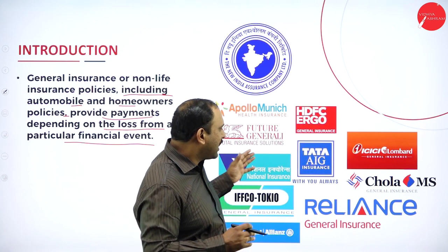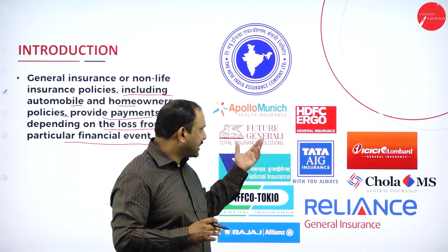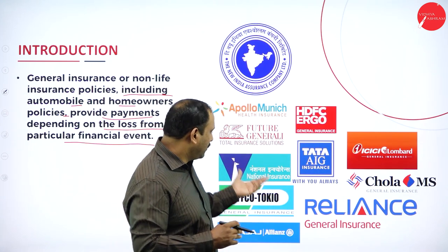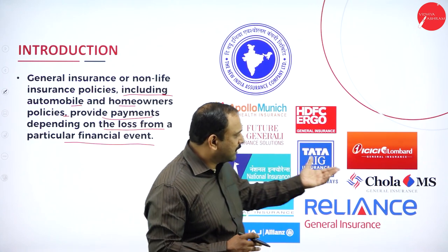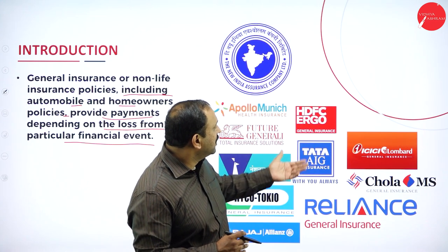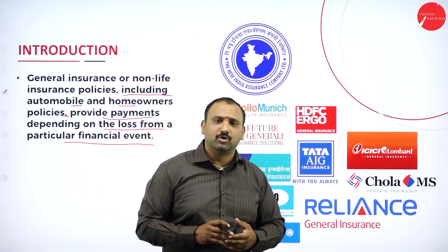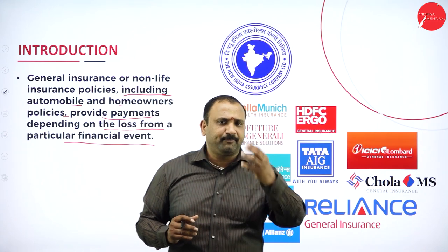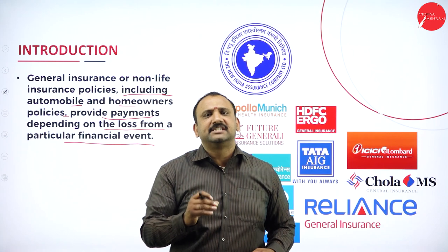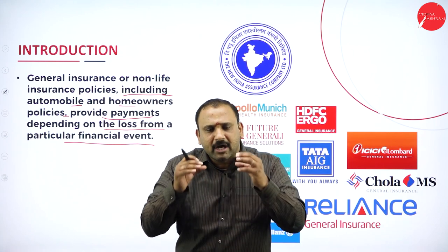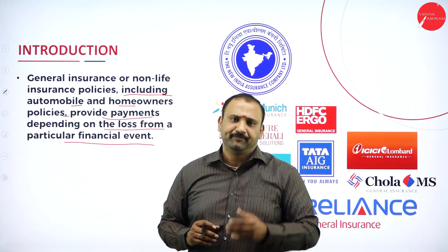In the Indian sphere we also have foreign companies like AIG tied up with Tata, Future Generali tied up with the Future Group, IFCO Tokyo, Allianz as part of Bajaj, Chola MS from the Morgan Stanley Group, Ergo from the UK, and Apollo Munich from the Munich Insurance Group. There are a lot of players invested in the vertical of general insurance.